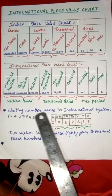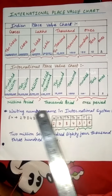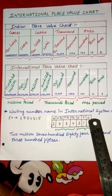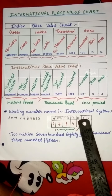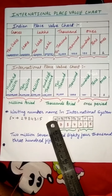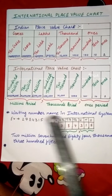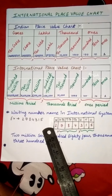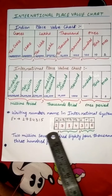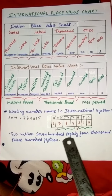Now we will learn how to write a number in the international system. To write a number in the international system, first we will make an international place value chart. We will write 1, 10, 100, 1000, 10,000, 100,000, and million. Then we will fill the number from right to left and make pairs of 3 so that we know where the comma will come. Then we will start writing the number.